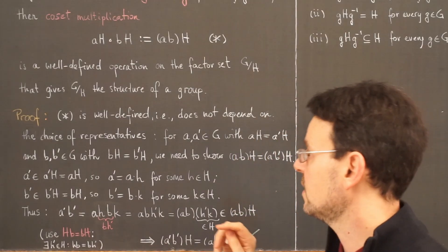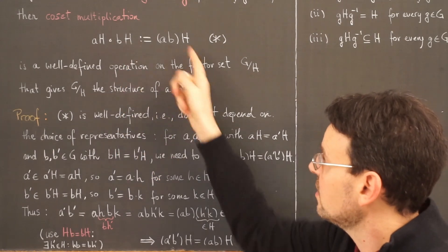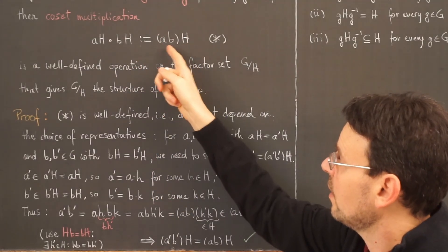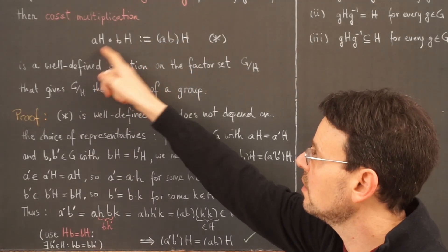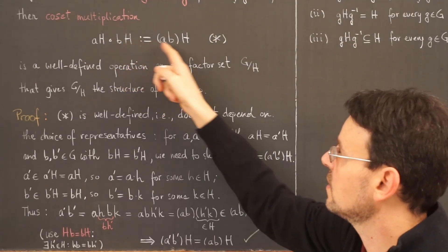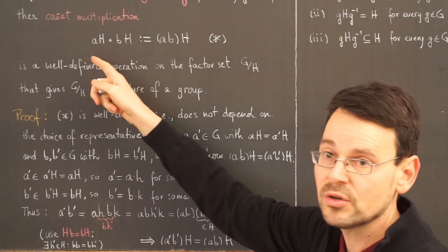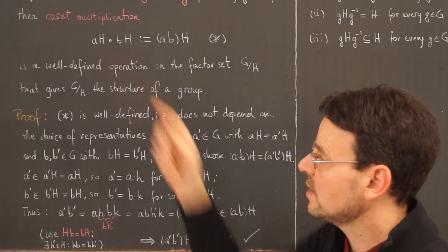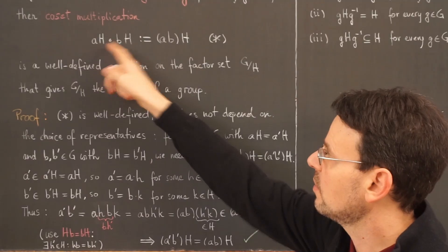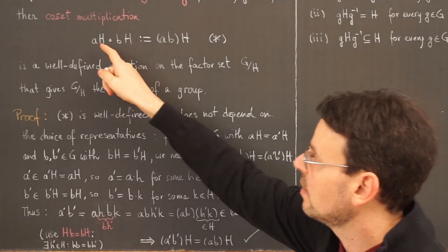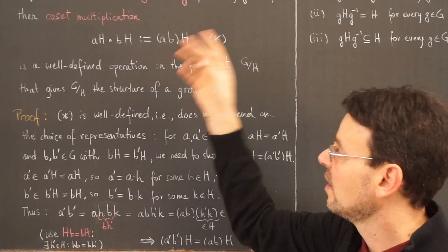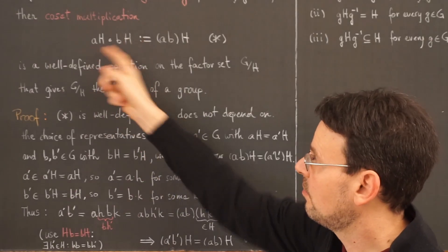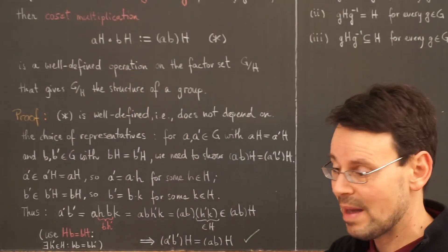Well-definedness means this operation does not depend on the choice of representatives. To form the coset of ab, I must choose a representative A of coset aH and a representative B of coset bH, but there are many different choices. If H is not the trivial subgroup, there are at least two elements in each coset. The result on the right side must not depend on which representatives I pick — otherwise this would not even be a well-defined map.